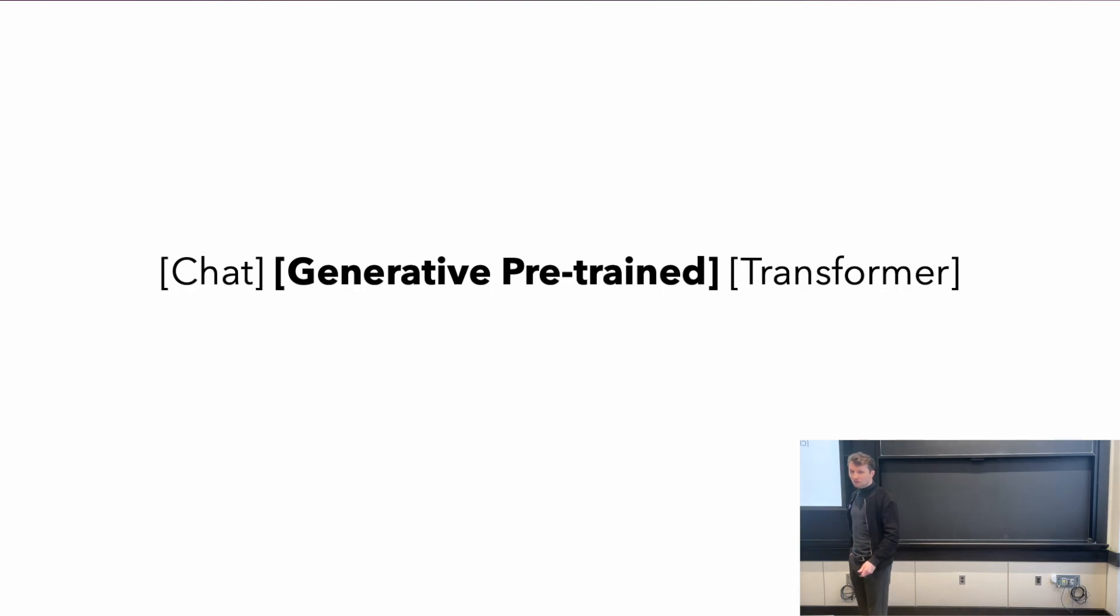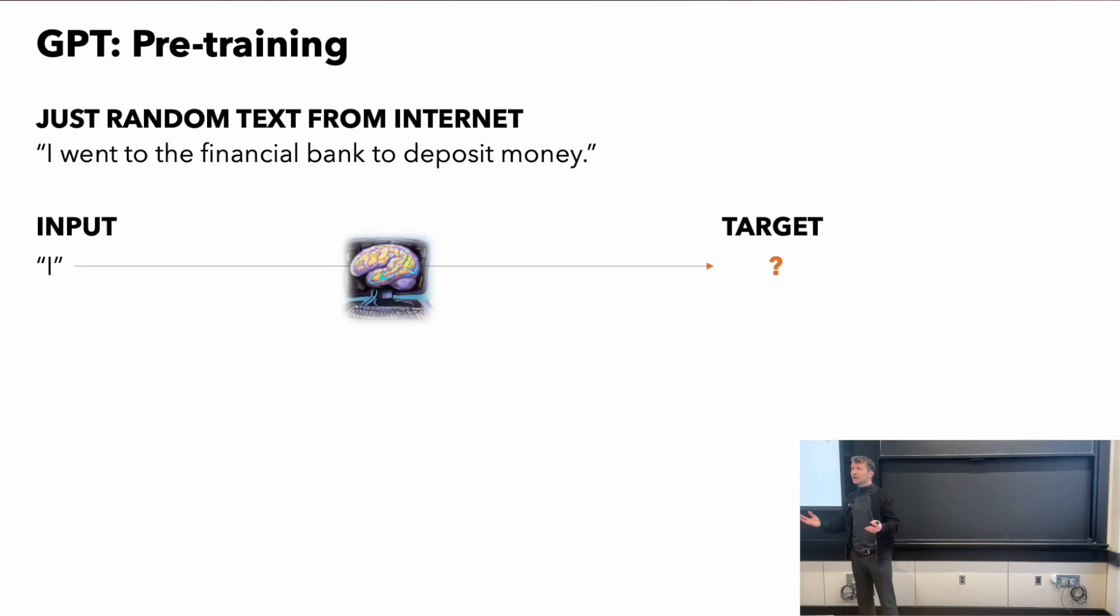So what does generative pre-trained mean? It just means what we talked about before: that we learn by getting text from the internet—sequences of words—and we train this model to predict the next word based on previous words. Maybe I download some text from online and the text is 'I went to the financial bank to deposit money.' The model trains on that, word by word. It starts by getting the input—the brain, the model, the computer—inputs and digests 'I,' and then it tries to predict the next target.